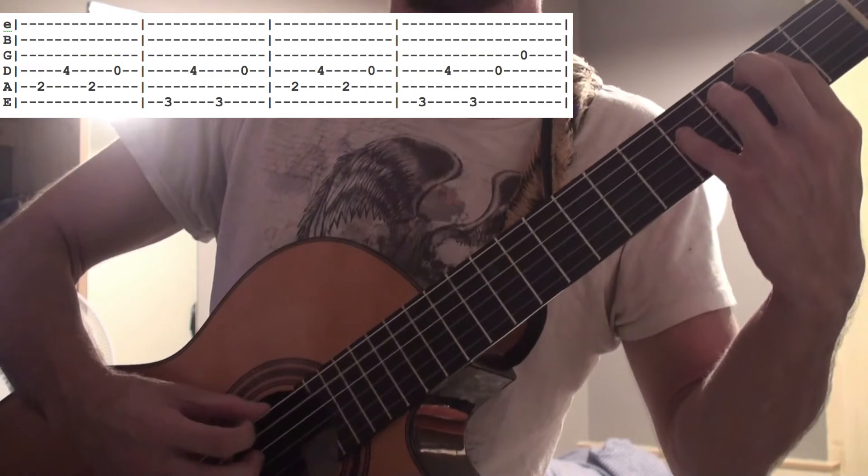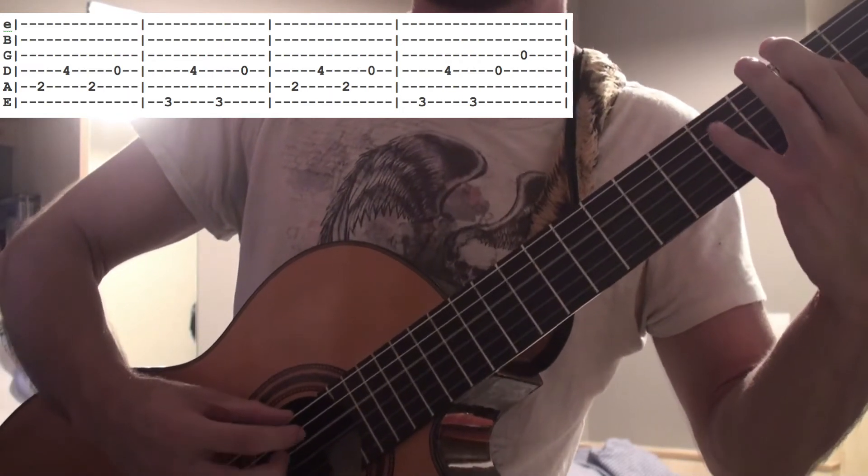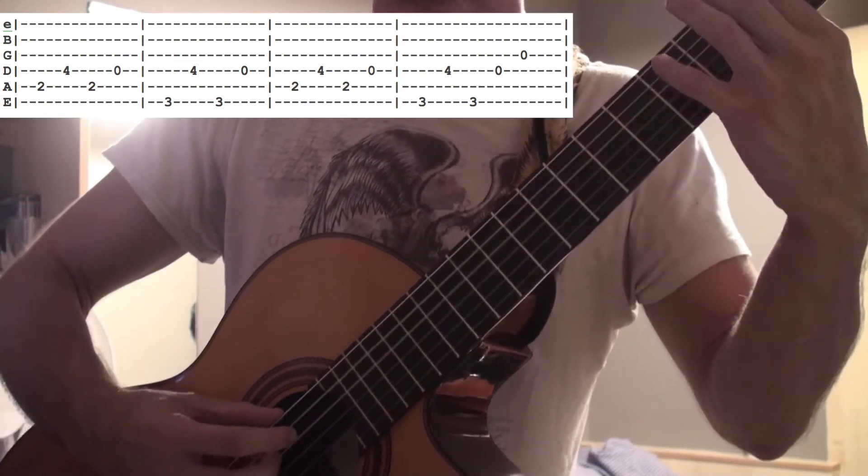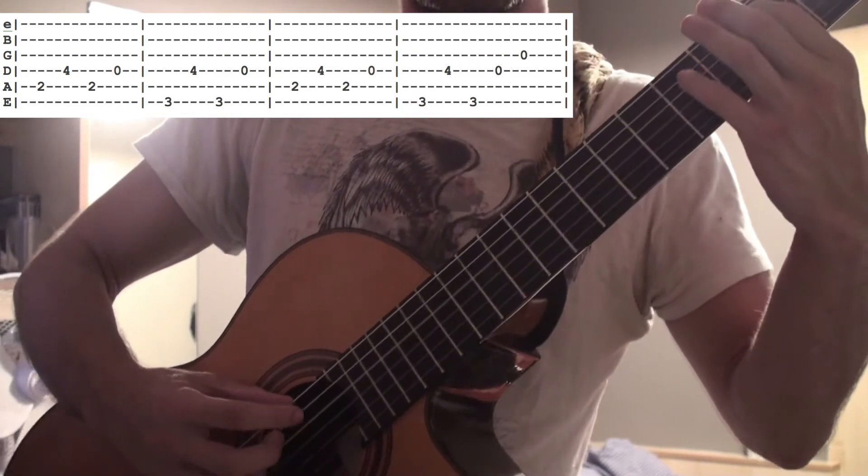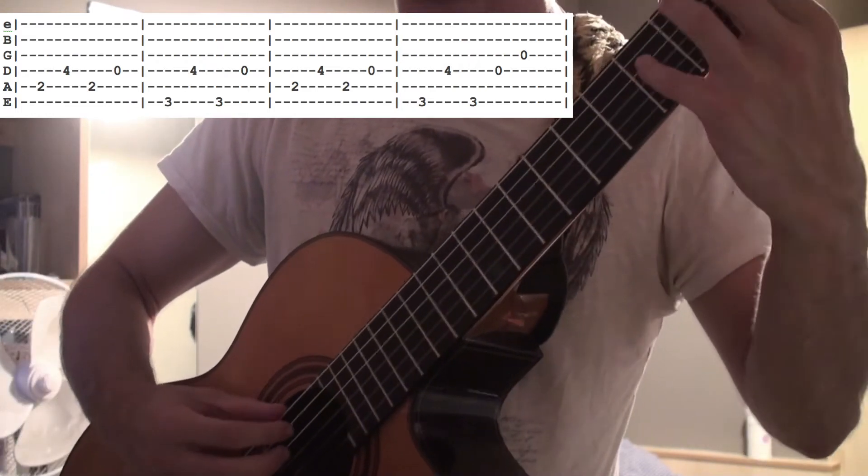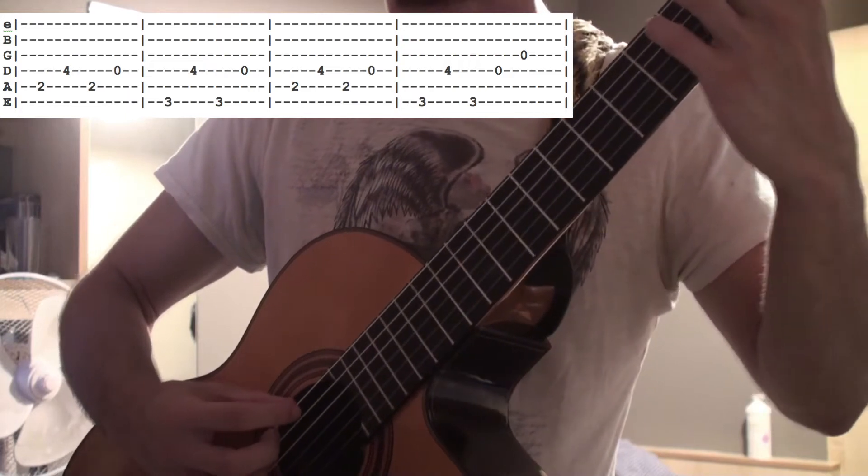So it's like 2-4-2, then open. So 2-4-2-0. That's the first one, the first shape.